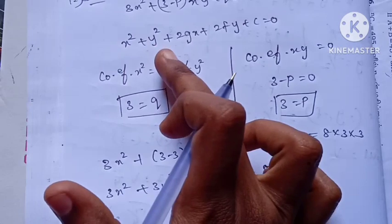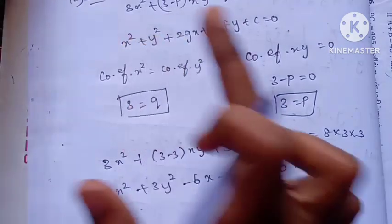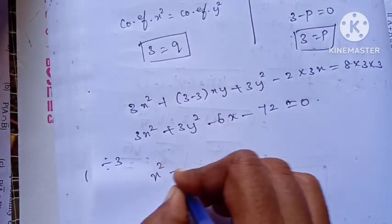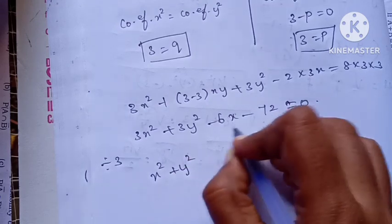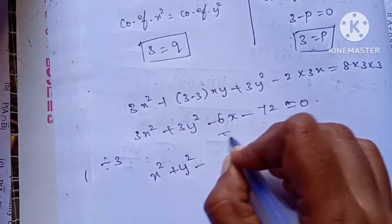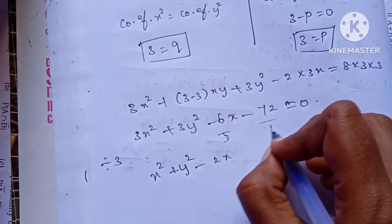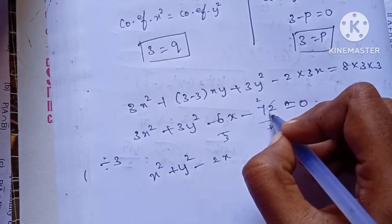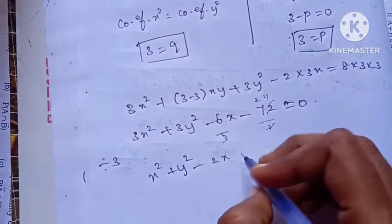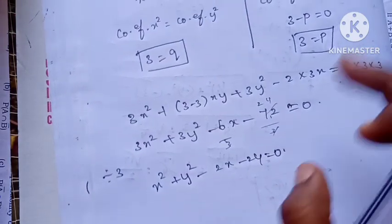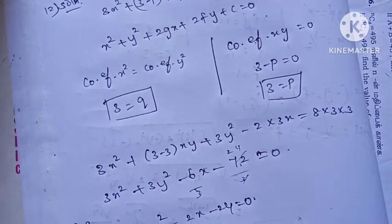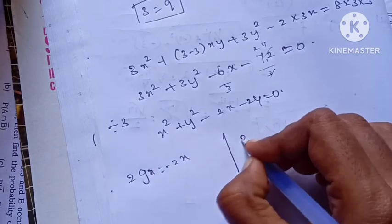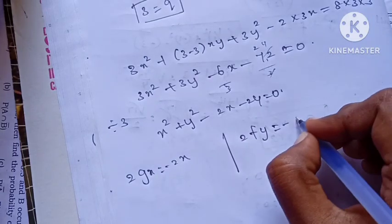Now let's compare this equation with the general form. The coefficient of x² and y² should both equal 1 — here they are both 3. So we divide through. Then comparing: -2gx is equal to -2x, and 2fy is equal to -2y.